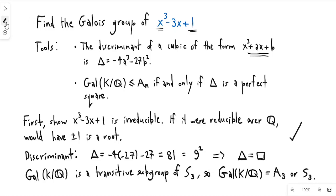And we already showed that this is a subgroup of A₃, and so we conclude that the Galois group is equal to A₃. And that is it. Thank you very much for watching.